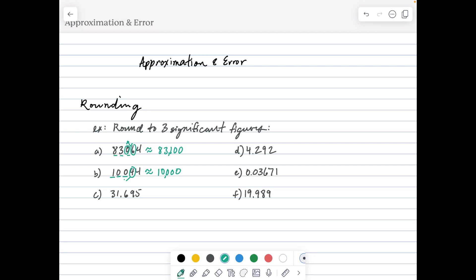Example C: 31.695 for three significant figures. We start with the most valuable digit, the 3, and those are the digits we're going to keep. The 9 tells us to round the 6 up to 7, and everything beyond that drops off, so we have approximately 31.7.